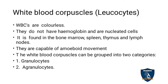White blood corpuscles or leukocytes: RBC is red in color but WBC is colorless because they don't have hemoglobin, and their cells are nucleated. WBC is found in the bone marrow, spleen, thymus and lymph nodes. The movement of WBC is amoeboid movement.